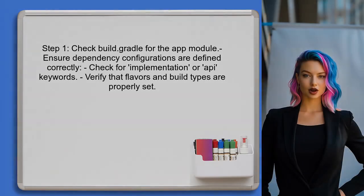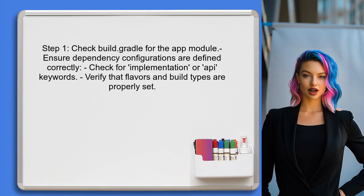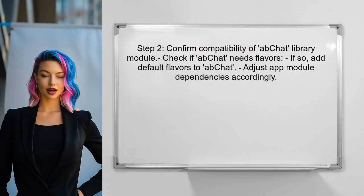To begin resolving the user's issue, we should first check the build.gradle file for the app module. The user needs to ensure that the dependency configurations are correctly defined for the flavors and build types. Next, the user should confirm that the library module, AbeChat, is compatible with the flavors defined in the app module.